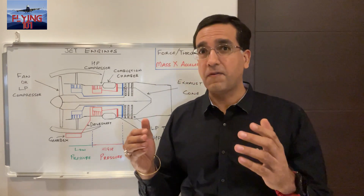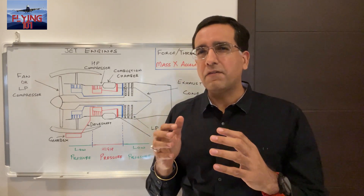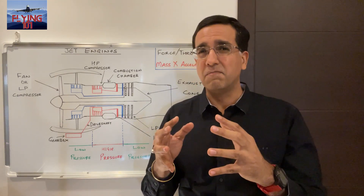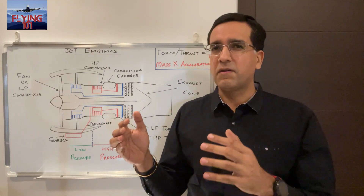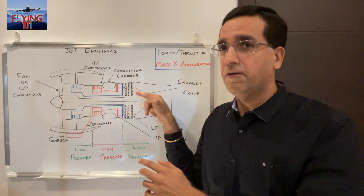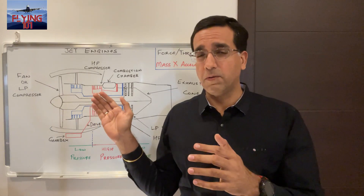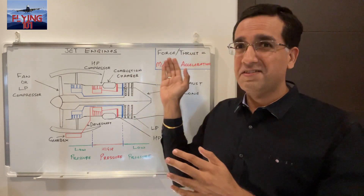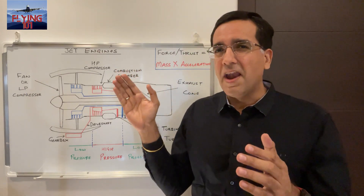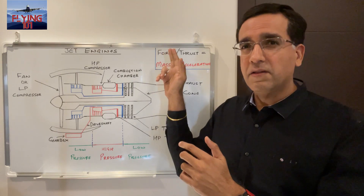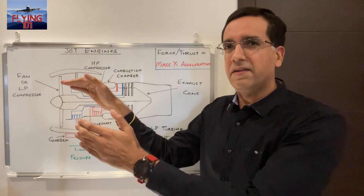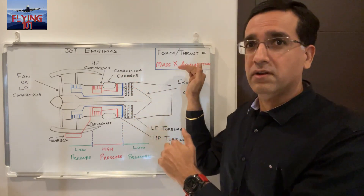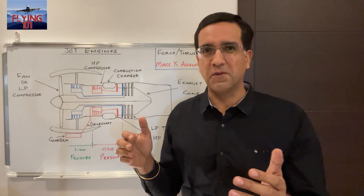High bypass ratio engines tend to be much quieter than their low bypass counterparts, as much of the noise in older engines is a result of the very high velocity achieved through the axial acceleration of the airflow through the hot core. Because force or thrust is mass times acceleration — if mass can be increased (the mass of air inducted by the fan in a high bypass ratio engine) then its acceleration can be reduced to achieve the same amount of thrust, giving good propulsive efficiency.